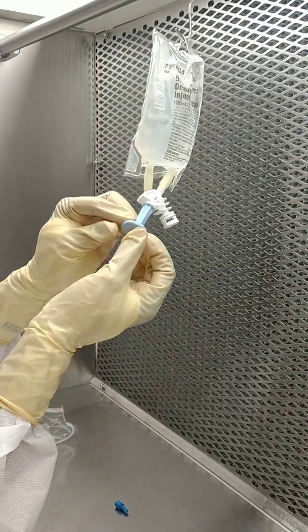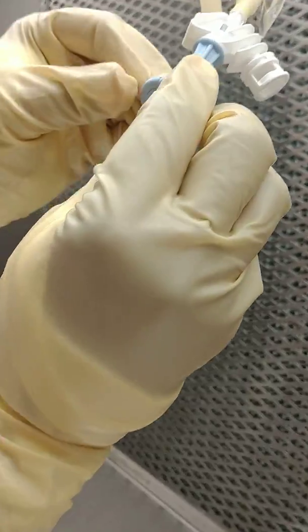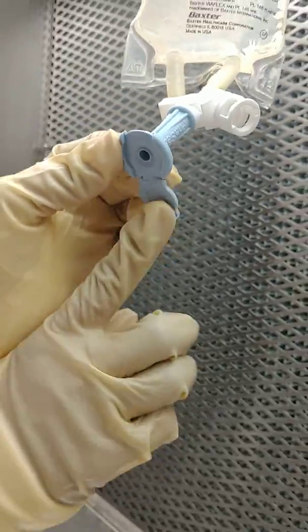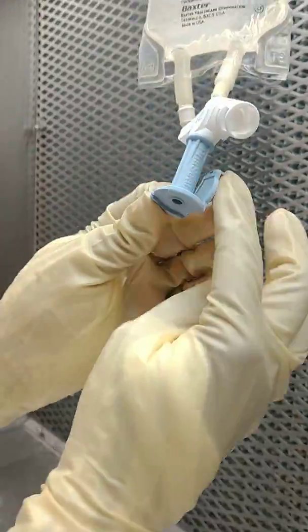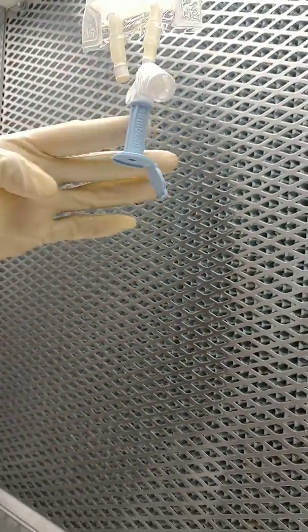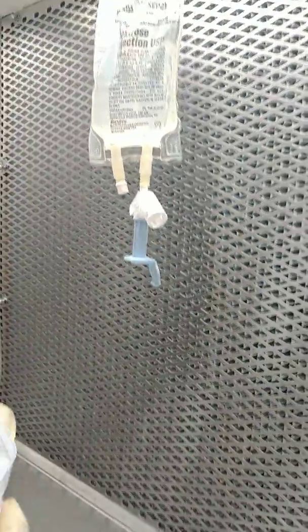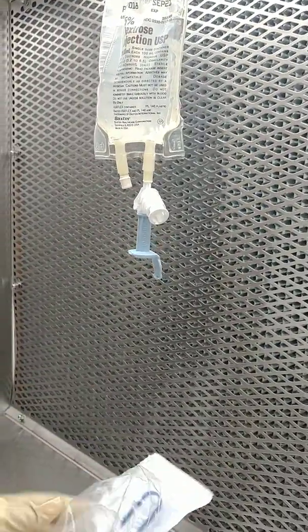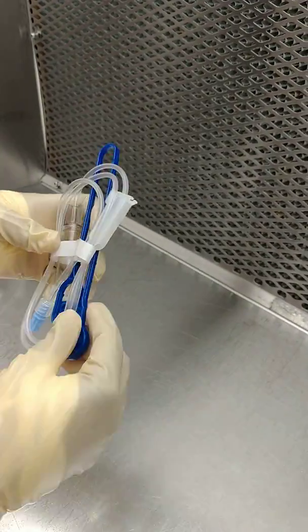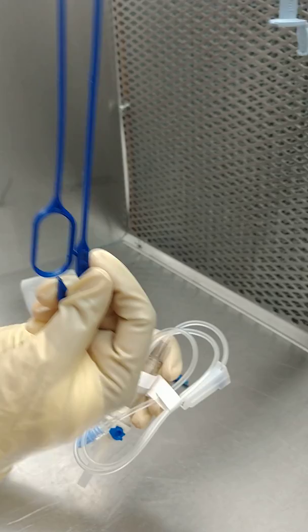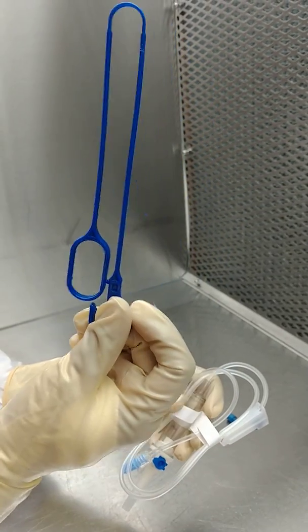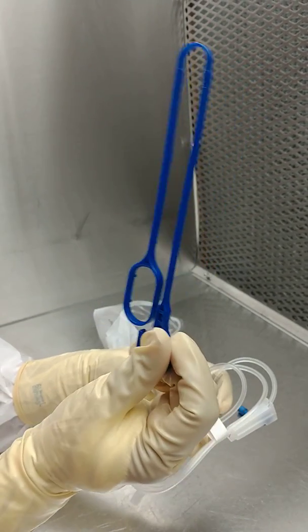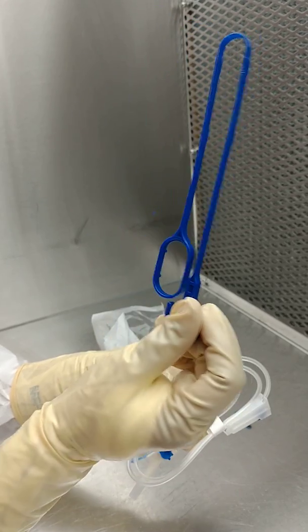Okay, we're going to open this piece. Now when you open your secondary set, the blue piece is just used to hang the IV. We don't need this, so you can discard your blue piece.